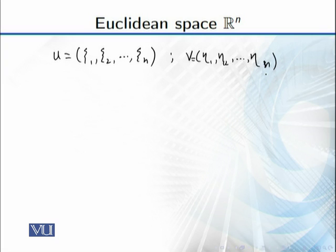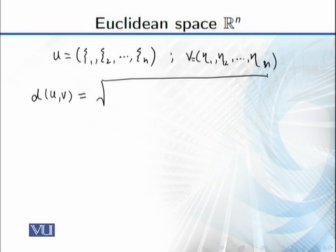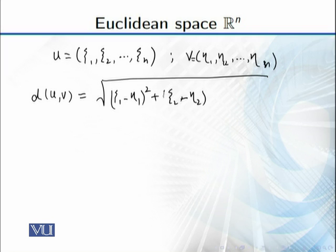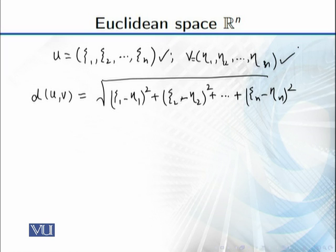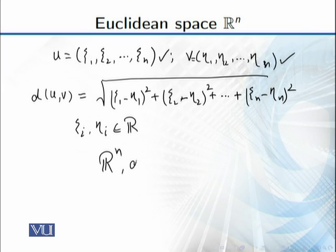Now we have the distance function, which we generalize from R³. The distance takes each component of u minus the corresponding component of v, squares them, sums them up, and takes the square root: d(u, v) = √[(η₁ − x₁)² + (η₂ − x₂)² + ... + (ηₙ − xₙ)²]. All entries xᵢ and ηᵢ are real numbers, and the distance between two points u and v is defined by this formula. So Rⁿ along with this distance function is a metric space.